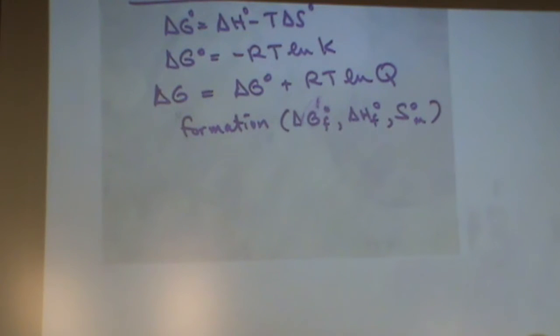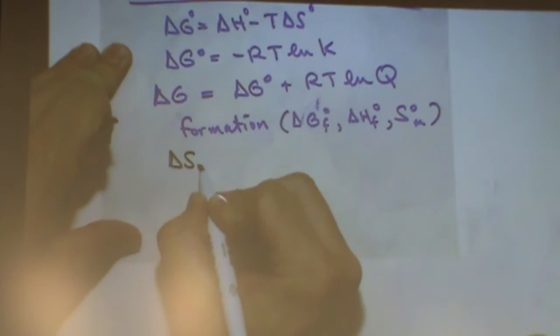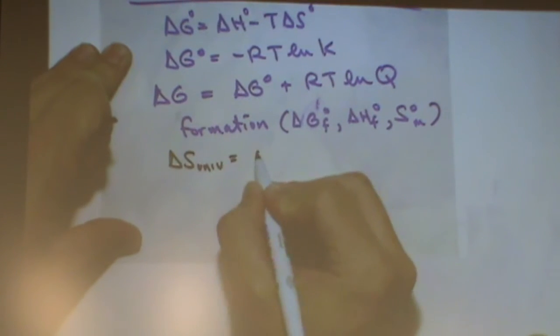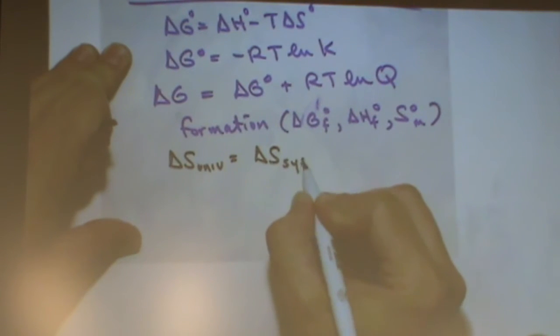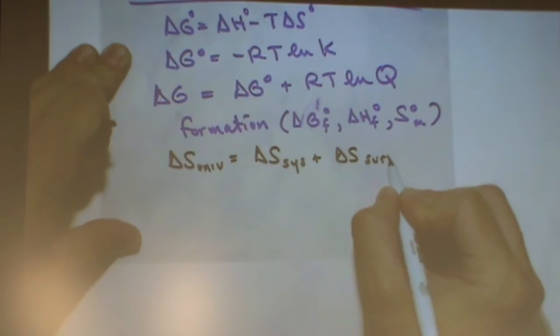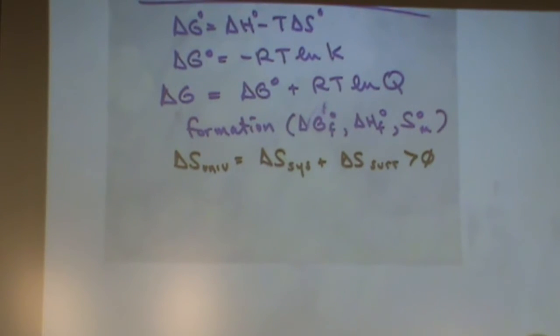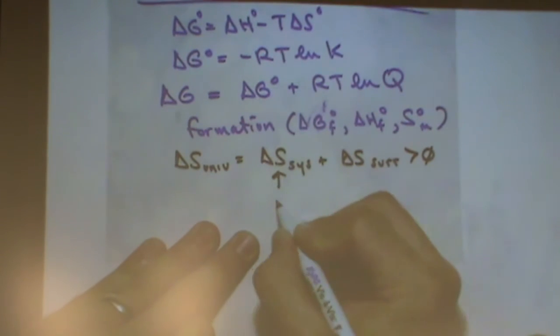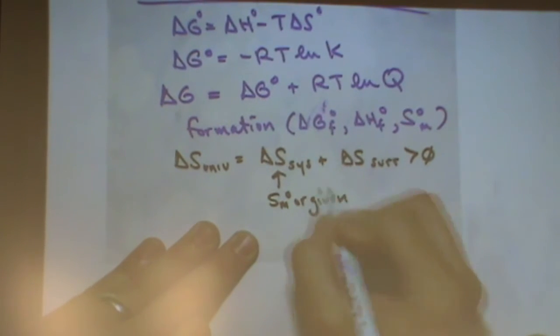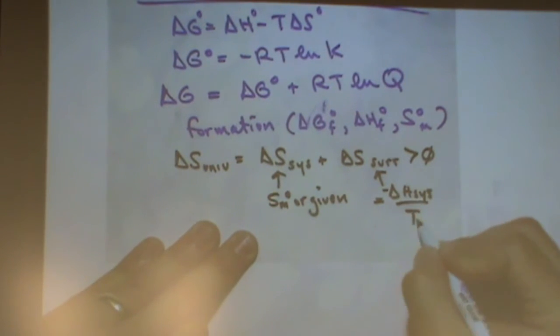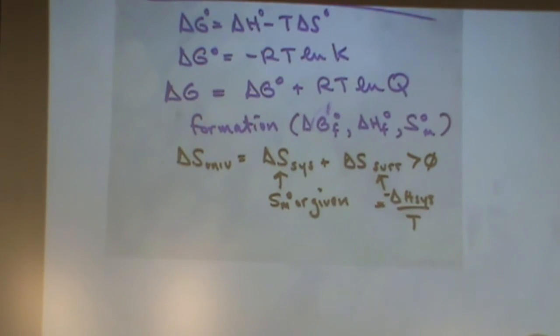So all the formations, you can do a formation type calculation for delta G, delta H, we did that at the beginning of the quarter, and then the molar entropies. So all those three variables could have a formation kind of calculation associated with it. Also, there's a couple of equations you won't use as much. The second law you might use occasionally. Delta S of the universe is delta S of the system plus delta S of the surroundings, and that has to be greater than zero. That's the second law of thermodynamics.